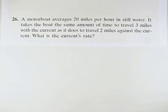A motorboat averages 20 miles per hour in still water. It takes the boat the same amount of time to travel 3 miles with the current as it does to travel 2 miles against the current. What is the current's rate?